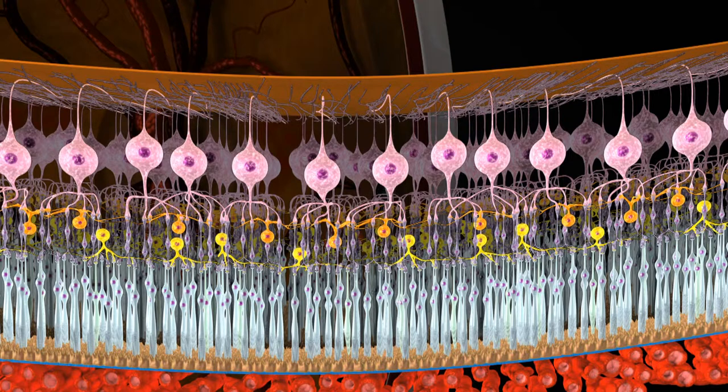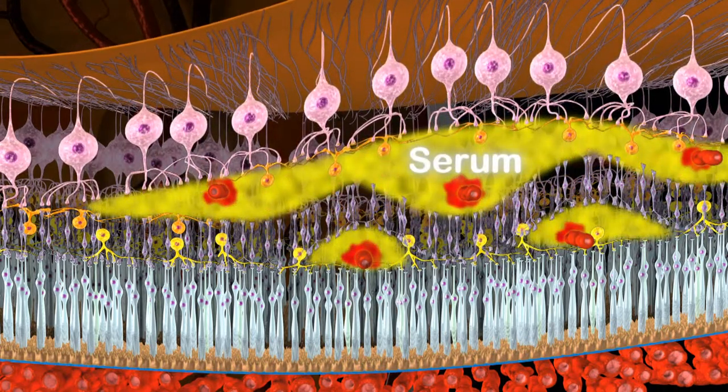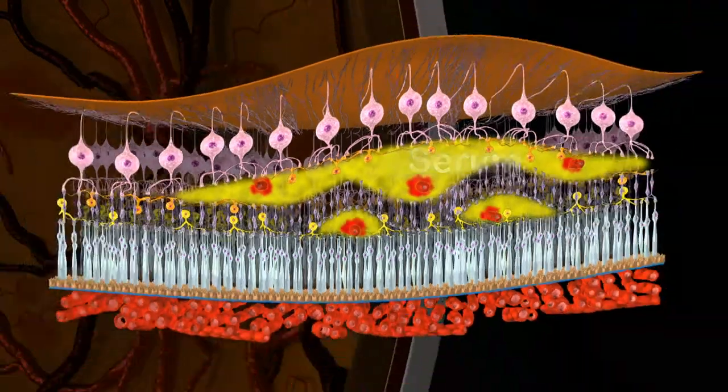serum, the fluid consisting of small proteins and lipids, can also seep into the retina. This resulting leak can lead to macular edema, a cause of visual distortion or visual loss.